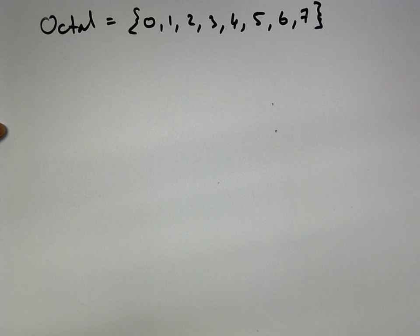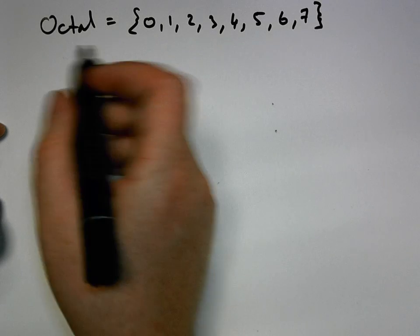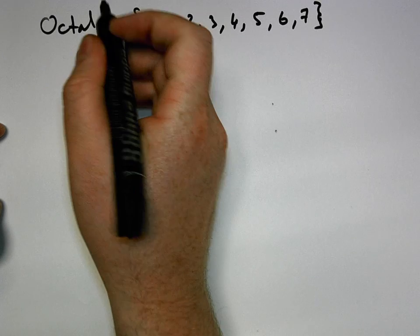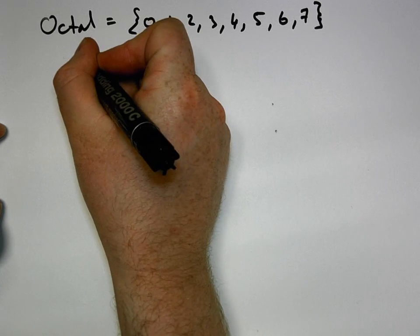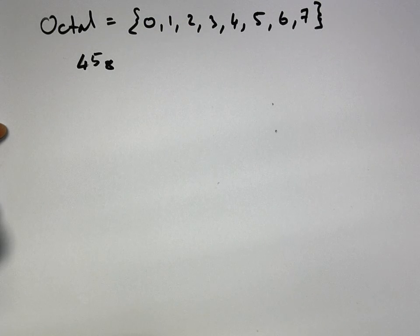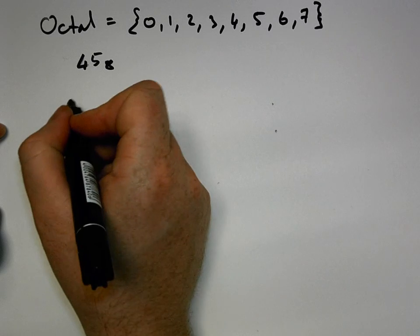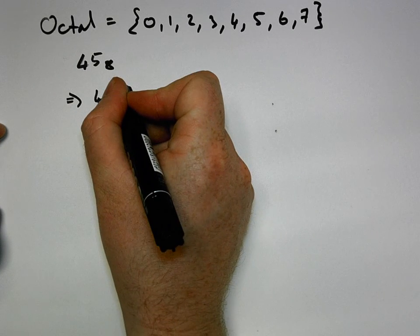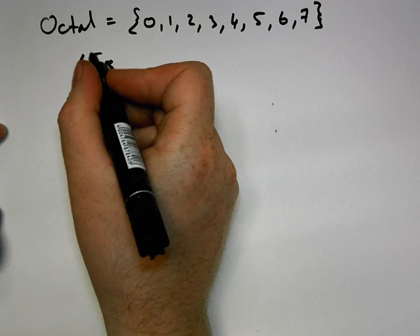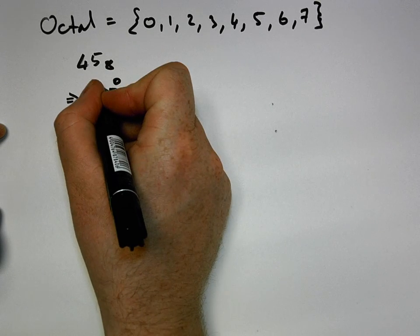So again, we want to grab any octal number, so we take any elements from this alphabet. Let's say we have 45 base 8. If we want to change this into a decimal number, we simply take 45, write down a 0 above the least significant digit, and go from right to left, counting 0, 1.